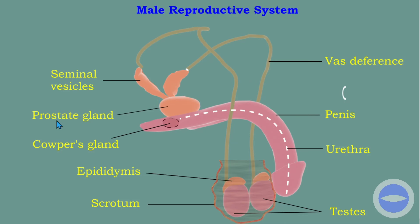These are the parts that the examination guideline is talking about — there are about nine of them. You must know them; you don't have to add any other parts, only these ones. You must be able to label them and you must be able to know their functions.